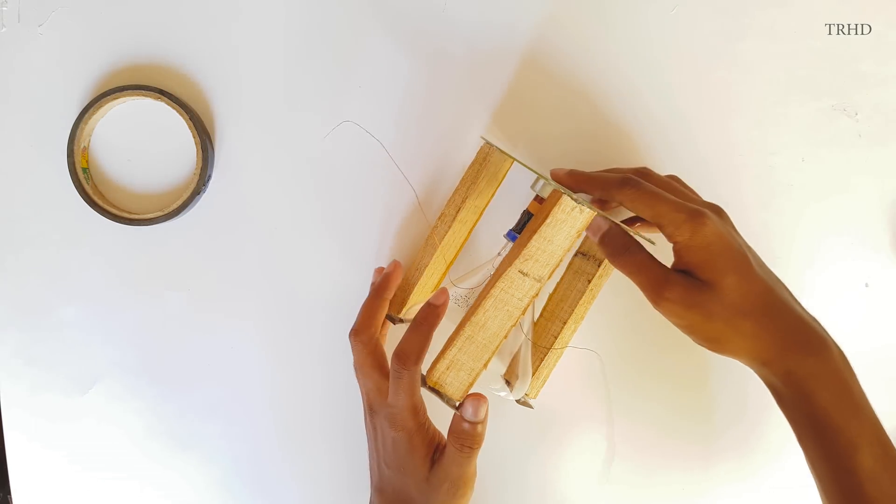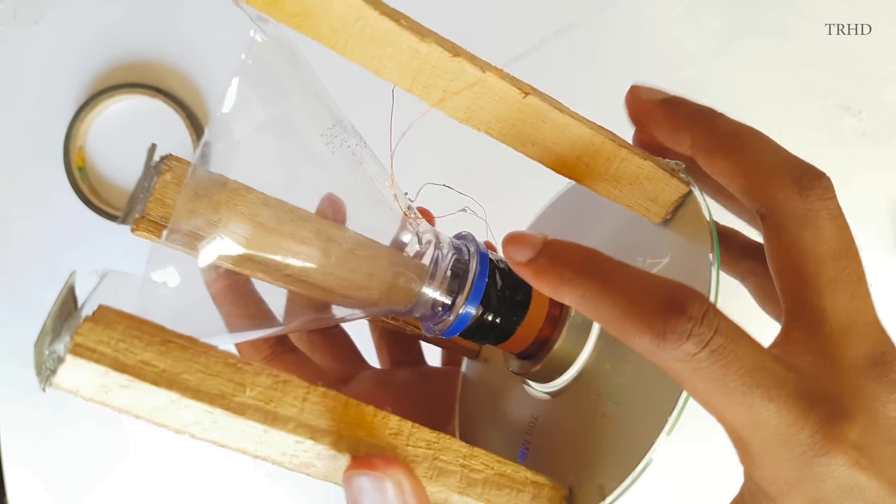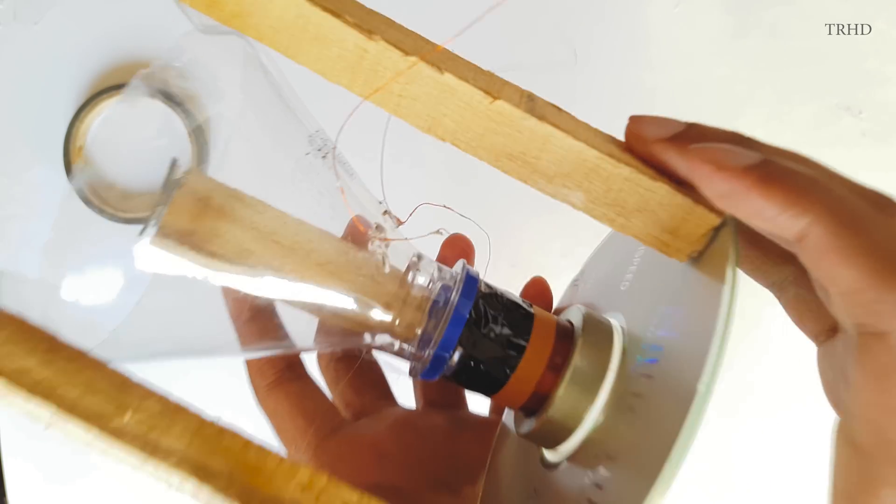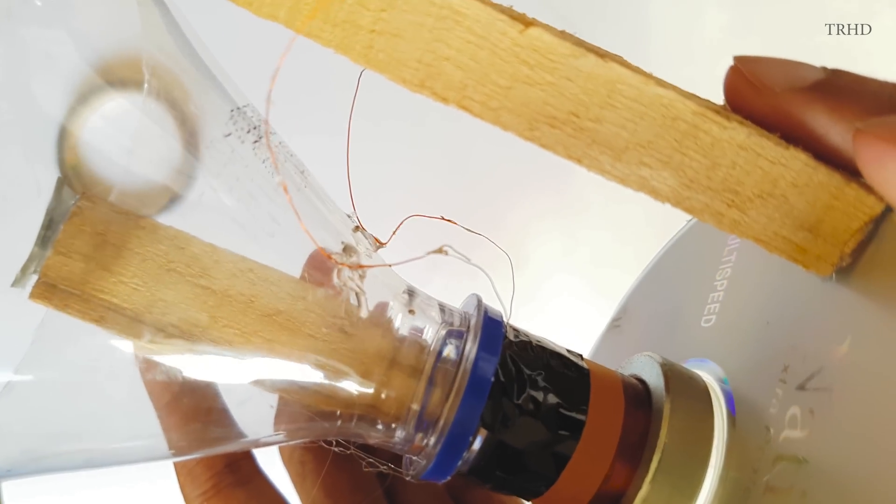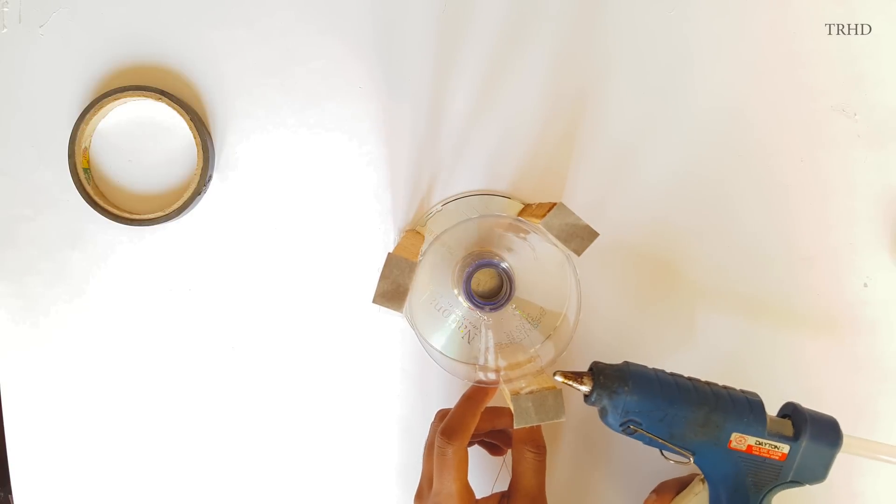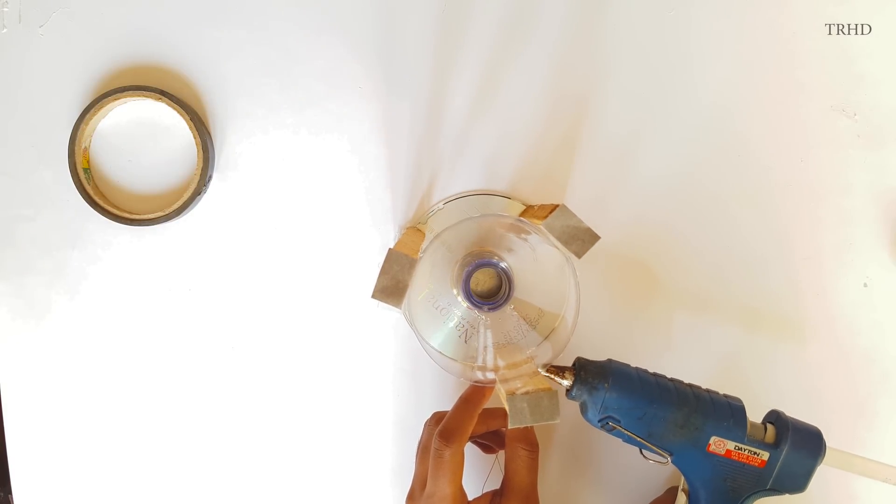So the soldering part is done. Just have a look at it. It should look somewhat like this. These wires will act as the connections for this speaker so that we can connect an amplifier and play music on it. Now stick these copper wires to this wooden stick so that it'll hold the wires firmly using this glue gun.